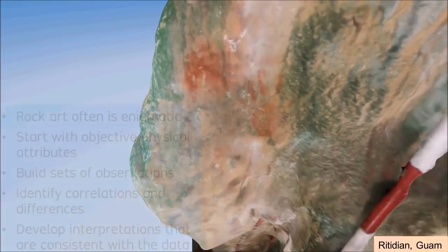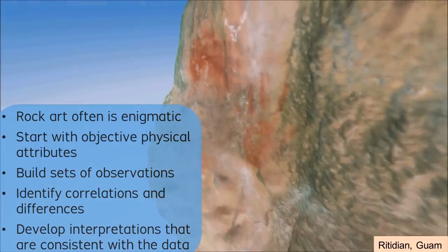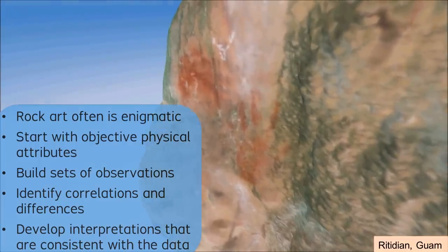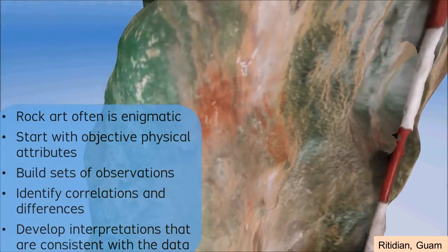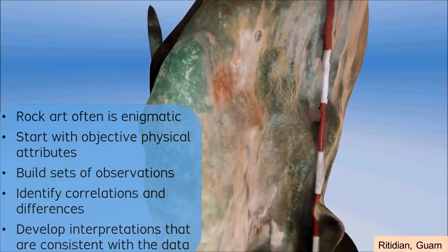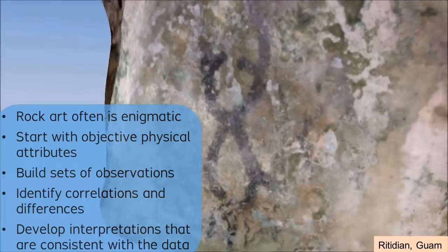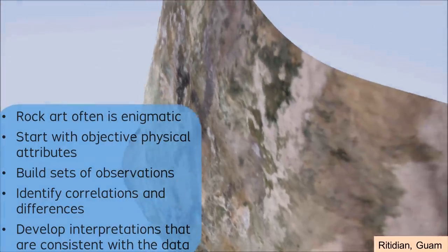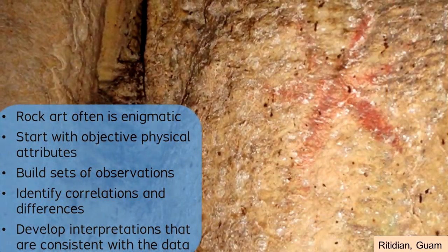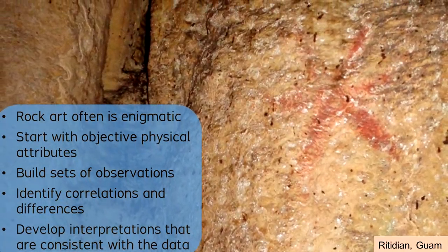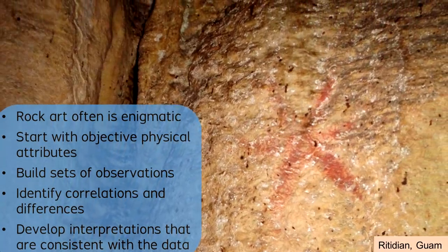Rock art often is enigmatic, but you can begin to study any instance of rock art in terms of its objective physical attributes. Next, you can build your sets of observations and identify correlations or differences in the patterns of evidence. The more clearly that you can describe the physical attributes, the more confidently you can develop your interpretations. Logically, the interpretations should be consistent with the physical data observations.